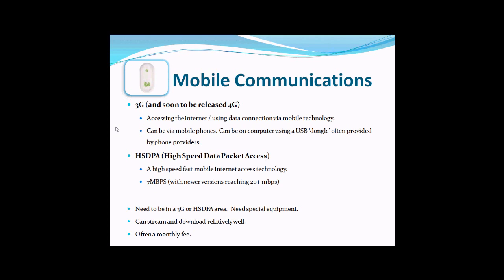Then you've got HSDPA, which is quite old now but offers very high-speed data access. It gives you 7 megabit internet access, with newer versions reaching 20+. Imagine 7 megabytes of internet access through your phone — that gives you a broadband-equivalent internet connection on your mobile phone, so you can do anything you would on a PC. Quite fast indeed, and the same applies on your laptop with an HSDPA connection.